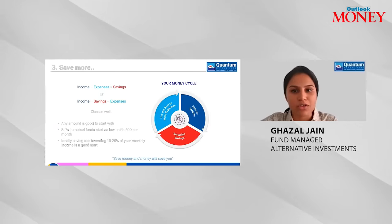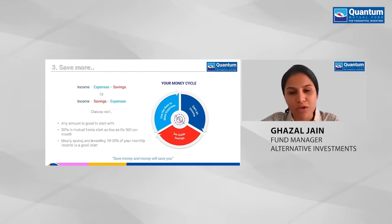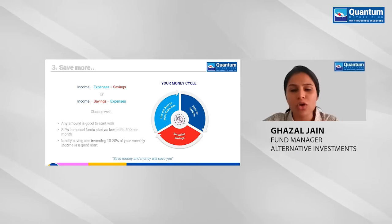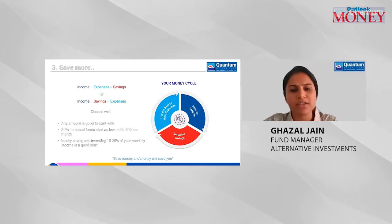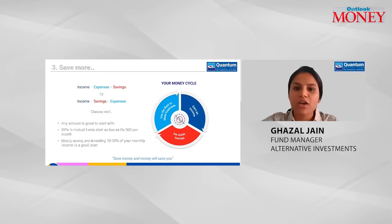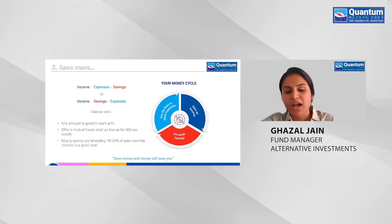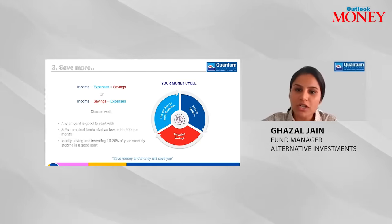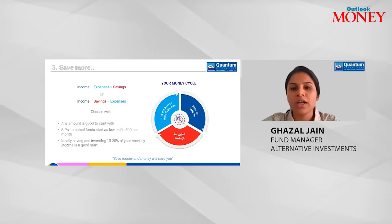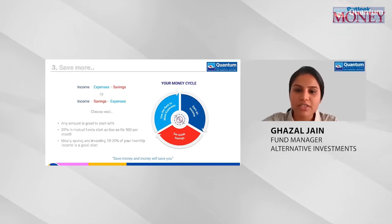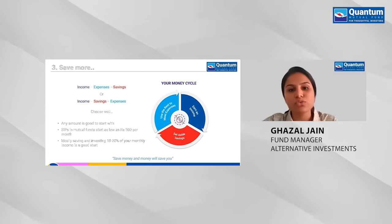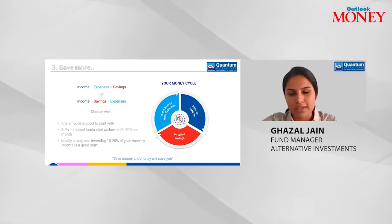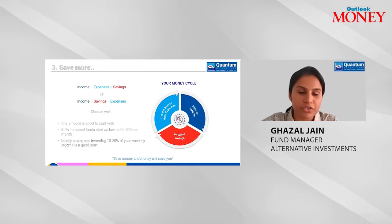Step three is to save more. Usually, our money cycle is such that income comes in, we spend on household expenses, children's education, travel, and whatever is left we count as savings. Another approach is that once your income comes in, you first put aside your monthly saving — whatever you've decided — and then whatever is left after saving is what you freely use for expenses without feeling guilty. This small shift in approach towards savings can make a really big difference in the long run.